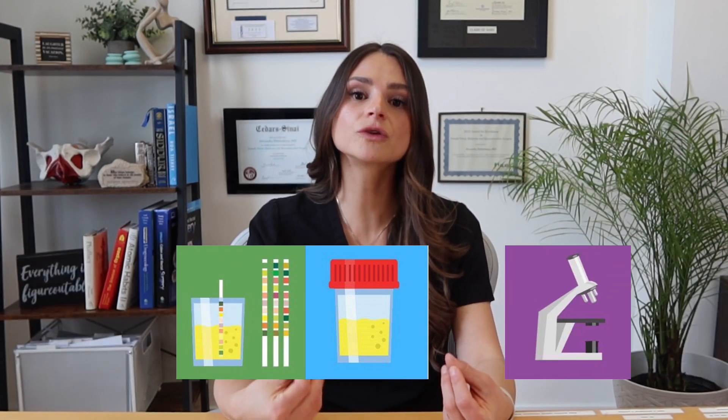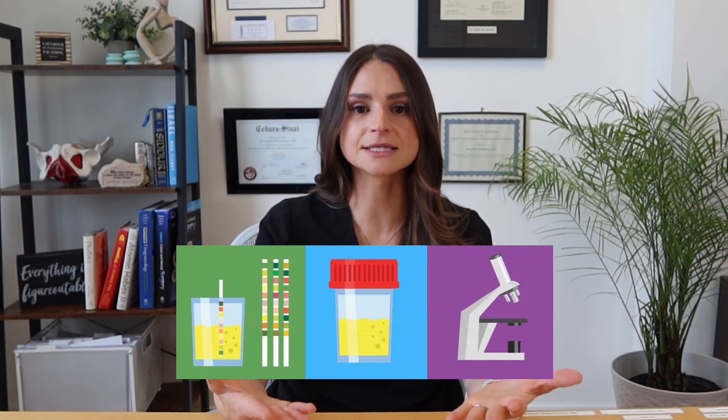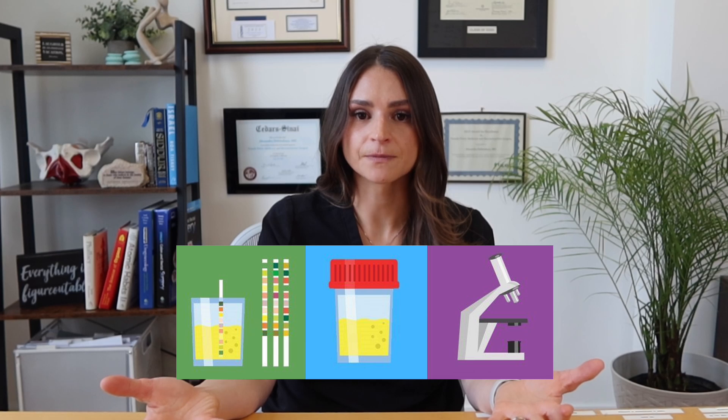Depending on the test, you will wait from one to several days to get the results. When we test for urinary tract infection, first we will receive a urinalysis, which looks at exactly what cells are in your urine. We can see blood cells, we can see white blood cells, and it can give a preliminary result to your doctor if there is any suspicion of infection.